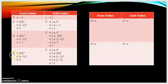Next, i to the power of 8: in the bracket we put i² to the power of 4, because 2 times 4 is 8. So i² is negative 1, and negative 1 to the power of 4 is positive 1. You can see that the method is the same — inside the bracket must be i squared.